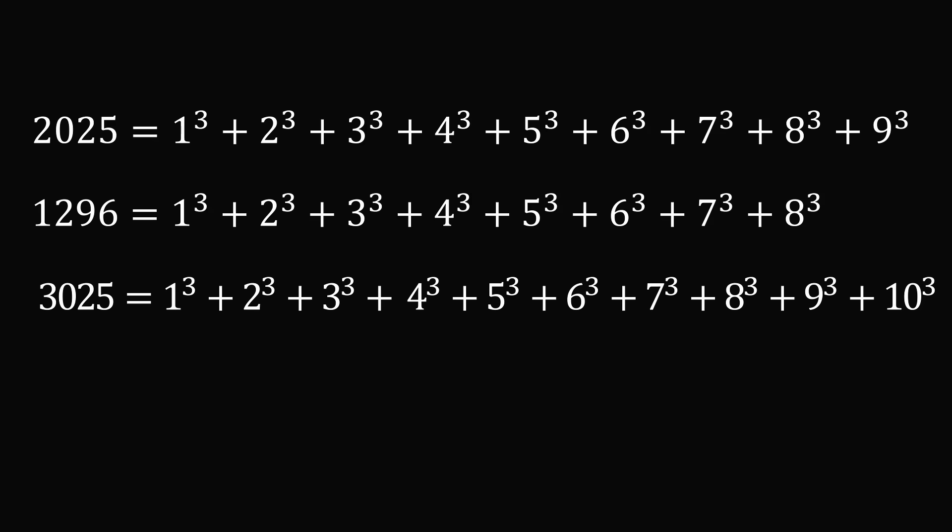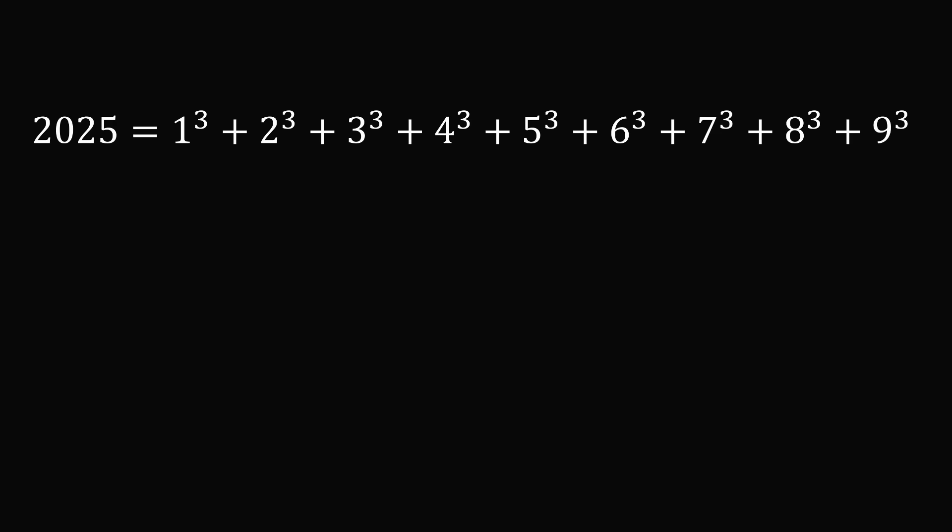The next year that will have such a property will go to 10 cubed, and that is 3025. Now there's another fun way that we can write 2025. It is equal to the square of the sum of the first nine numbers: (1 + 2 + 3 + 4 + 5 + 6 + 7 + 8 + 9)².